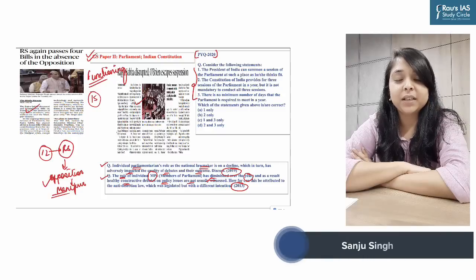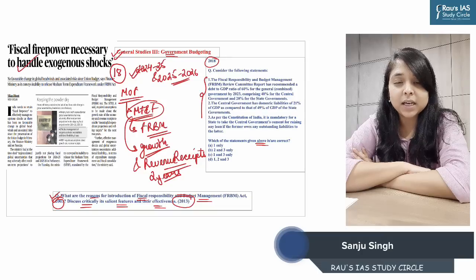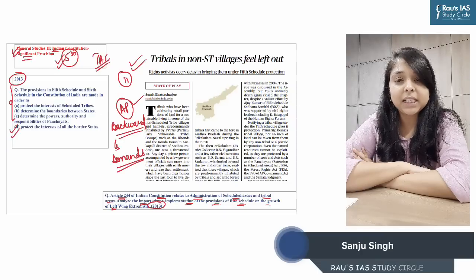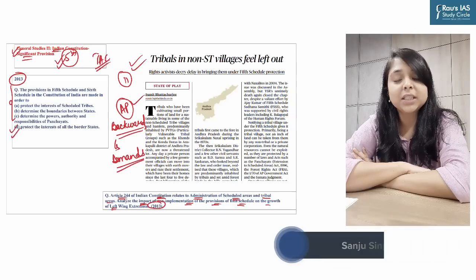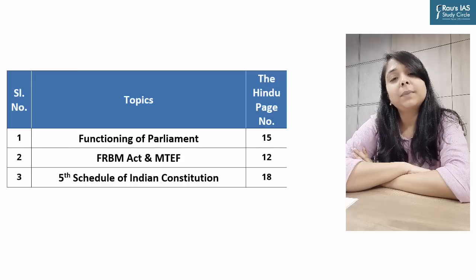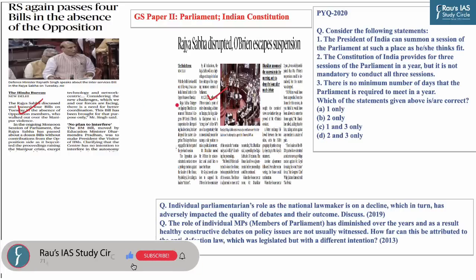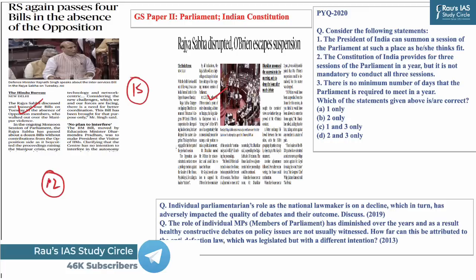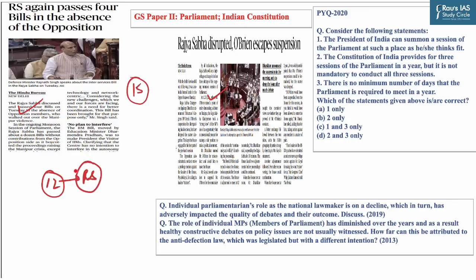Hello and welcome to Daily News Simplified. Here we take up important news articles and discuss them in detail as per the demands of the UPSC examination. Topics for today's discussion are displayed on your screen. The first topic is based on a news article from page 15 of The Hindu, which mentions that throughout the ongoing monsoon session of Parliament, approximately 12 bills have been approved by Rajya Sabha without input or participation from the opposition, which chose to boycott proceedings in light of the Manipur crisis.